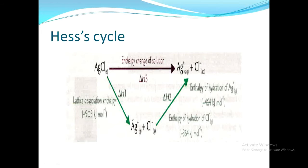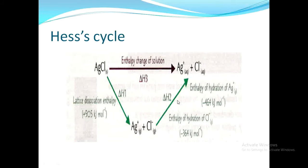The enthalpy of solution of silver chloride is represented by ΔH3. For the indirect process, the green arrows represent the first step: the conversion of silver chloride into silver positive gaseous ions and chloride negative gaseous ions. The enthalpy change for converting one mole of silver chloride into its gaseous ions is known as lattice energy or lattice dissociation enthalpy, represented by ΔH1, with a value of +905 kJ/mol.